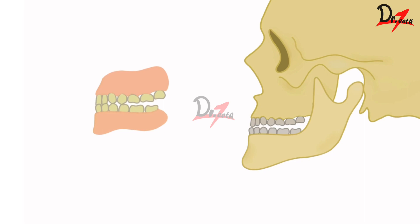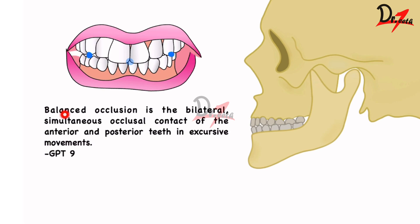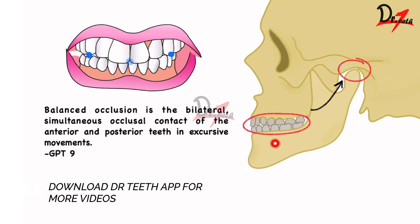Without that three-point contact, the denture is unstable. We need at least three-point contact — one anterior and two posterior on either side. By definition, balanced occlusion is the bilateral simultaneous occlusal contact of the anterior and posterior teeth in excursive movement. The temporomandibular joint and teeth relationship determines centric relation. The occlusion present when the mandible is in centric relation is centric occlusion.